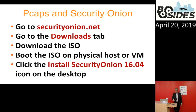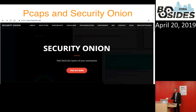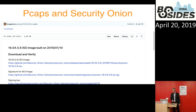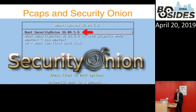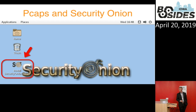To get started with Security Onion, go to securityonion.net and click the Downloads tab. It takes you to a GitHub page where you can download an ISO. You boot the ISO on a physical host or VM, and then install Security Onion 16.04 by clicking the icon on the desktop. Once it boots, it goes to a desktop, and then you install Security Onion.